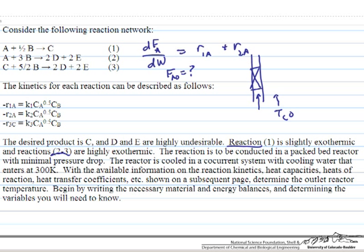We can likewise write a balance for B. B is consumed at half the rate of A in reaction 1, at 3 times the rate of A in reaction 2, and at 5/2 times the rate at which C is consumed in reaction 3. There is a typo to correct: the third rate expression depends on the concentration of C, not A, because A is not involved in that reaction. All terms are negative so oxygen is being consumed, and we will also need the initial flow rate of oxygen.